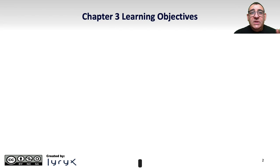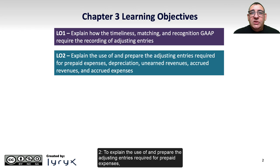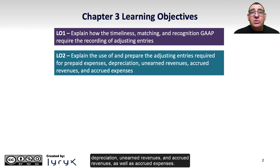There are six key learning objectives for this chapter. 1. To explain how the timeliness, matching, and recognition principles require the recording of adjusting entries. 2. To explain the use of and prepare the adjusting entries required for prepaid expenses, depreciation, unearned revenues, and accrued revenues, as well as accrued expenses.